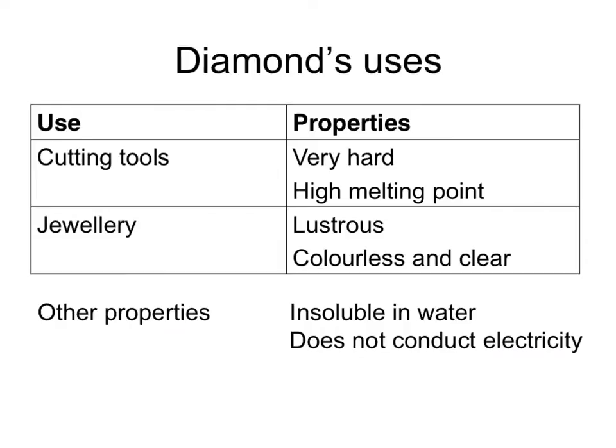Secondly, diamond is used in jewellery. Why is it used in jewellery? Because it is lustrous — in other words, it catches the light — and because it's colourless and clear, in other words see-through. Other properties that diamond has, such as being insoluble in water and not conducting electricity, aren't particularly relevant to these two uses you need to learn.